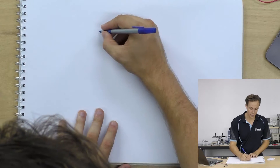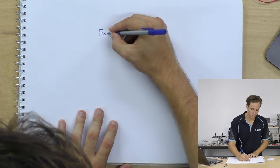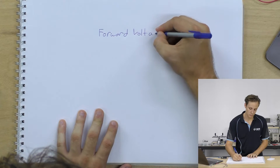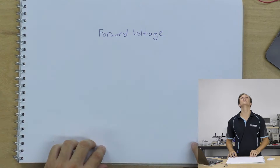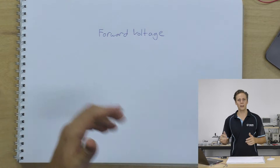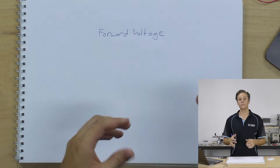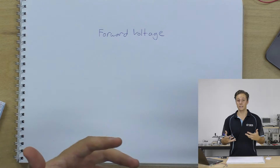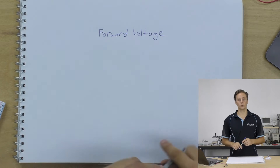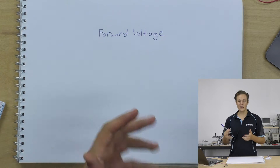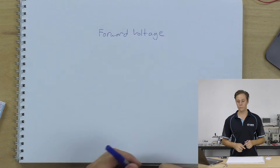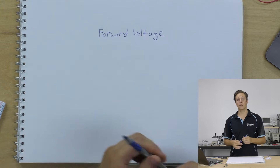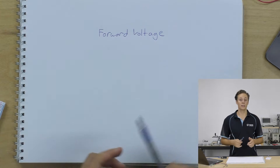First up we have the forward voltage. The forward voltage is the number of volts that the LED requires in order to light up at its full capacity. Most LEDs have a forward voltage between 1.7 and 3.3 volts. A blue LED is around 2.8 volts — a red LED will have a lower forward voltage, and a blue LED will be higher.